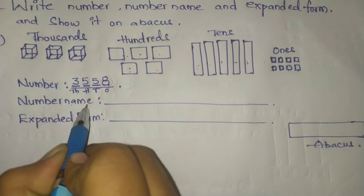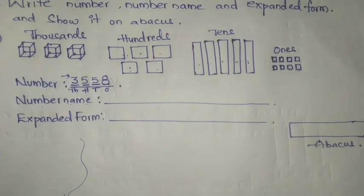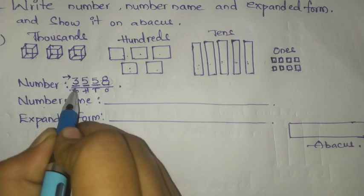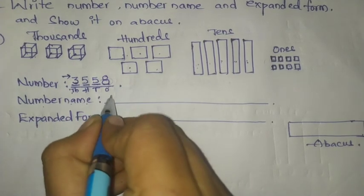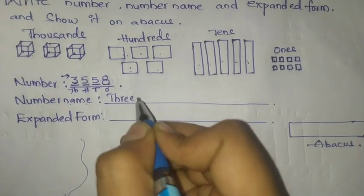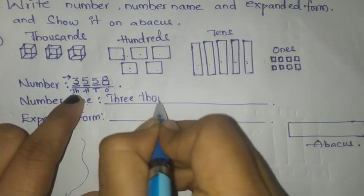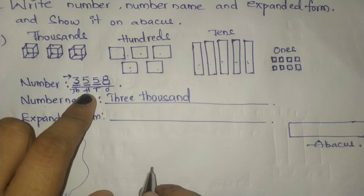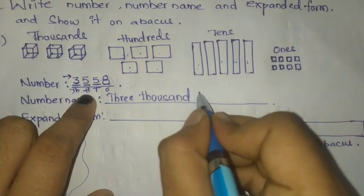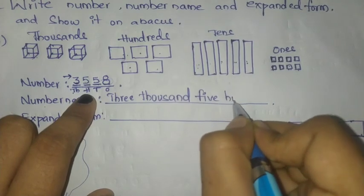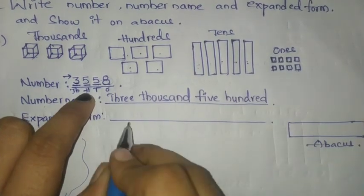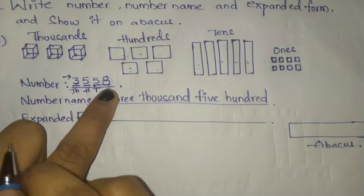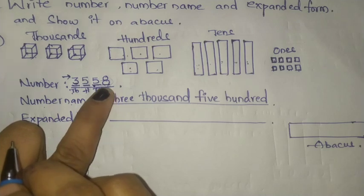Always we start writing the number name from the thousands place. How many thousands are here? Three. So we write: three thousand — T-H-R-E-E, T-H-O-U-S-A-N-D. How many hundreds? Five hundreds. While writing tens and ones, we write them together: tens is 5 and ones is 8, that is 58 — fifty eight.